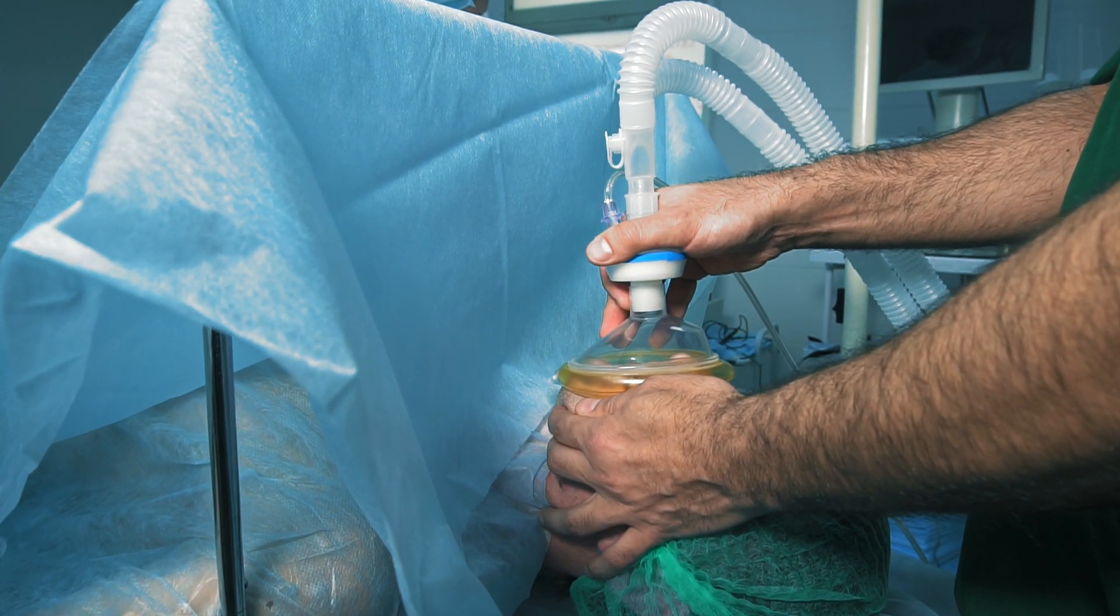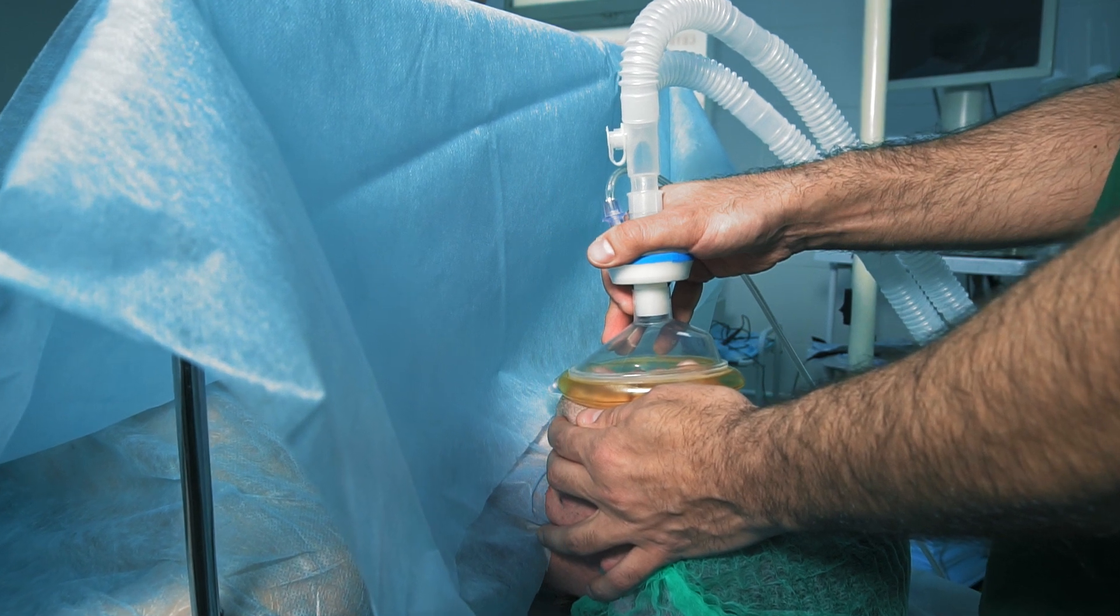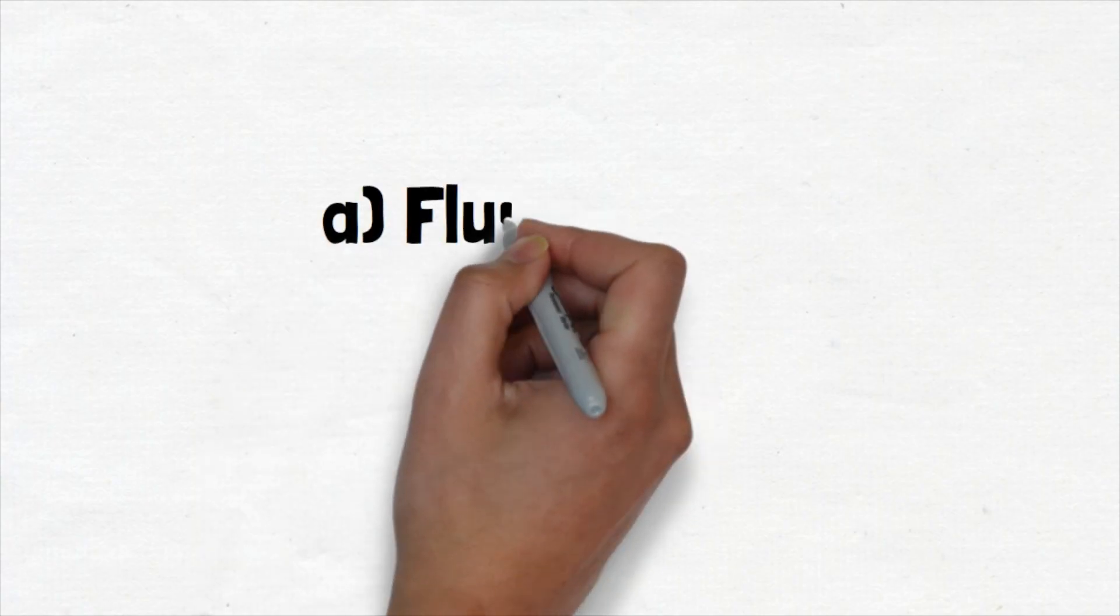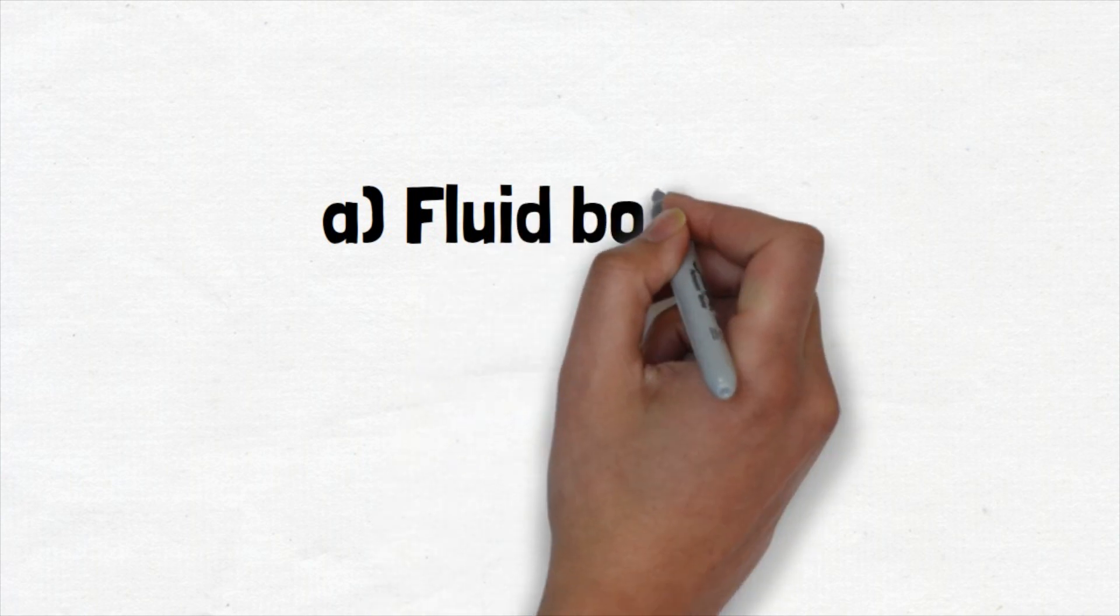The temporization steps are relatively specific for each problem that could occur, but let's talk about two common examples: hypotension or low blood pressure, and hypoxemia or low oxygen saturations. In future lectures we'll go through the specific temporizing measures for each problem.